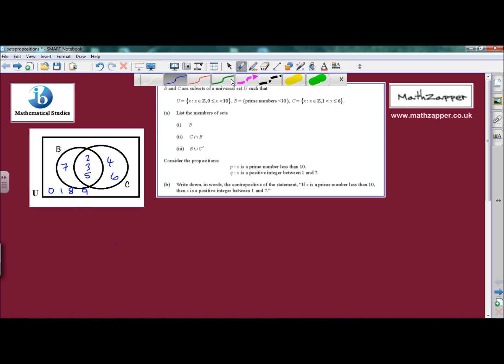So question A, part 1, list the members of set B. We can do this quite easily now that we've got a Venn diagram to look at. Set B is this part here, so it's 2, 3, 5 and 7. And then also by doing the Venn diagram you can put your numbers in order so that there's no confusion. So 2, 3, 5 and 7 is set B.